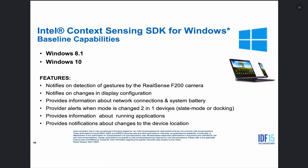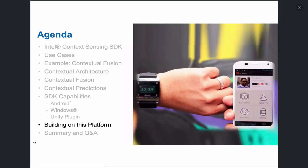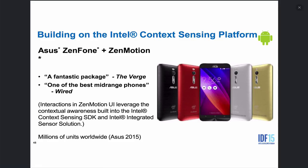We can also do things regarding two-in-one, understanding if you're in slate mode or if you're docked or in keyboard mode. And we have people who have already released apps and code that you can use based on this platform. The Asus ZenFone's ZenMotion UI leverages the context-sensing SDK — all of the ZenMotion capabilities are powered by the context-sensing SDK, and that's on millions of units already in market.